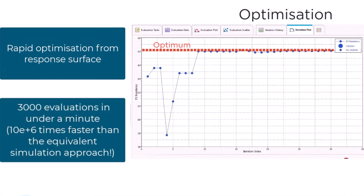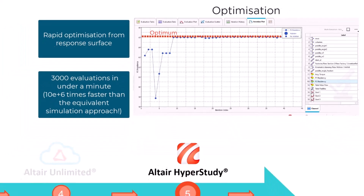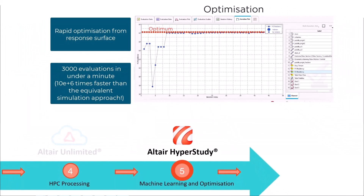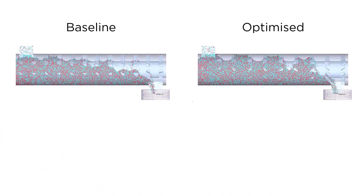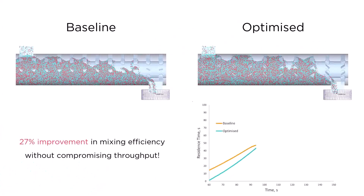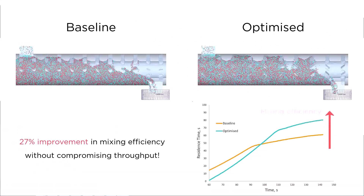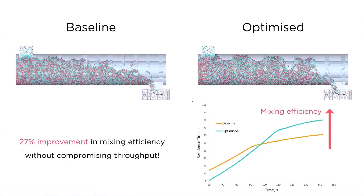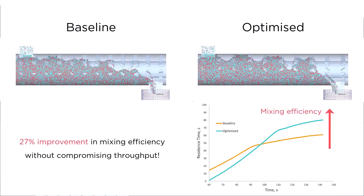An optimum for the design and operation of the mixer is converged on, and we are able to find a superior design with improved performance. In this case, we have increased the mixing efficiency from the baseline configuration on the left by increasing the residence time of our particles in the system without compromising the throughput.